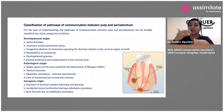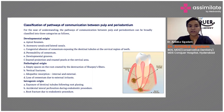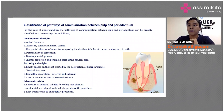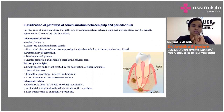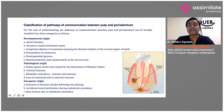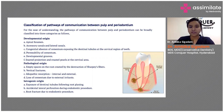Developmental grooves like palato-gingival grooves can also be pathways from the pulp to the periodontium. Enamel projections and enamel pearls at the cervical area are all developmental origins that form pathways from your pulp to your periodontium. Pathologically, if there is an empty space created due to the destruction of Sharpey's fibers, that is a pathological condition.